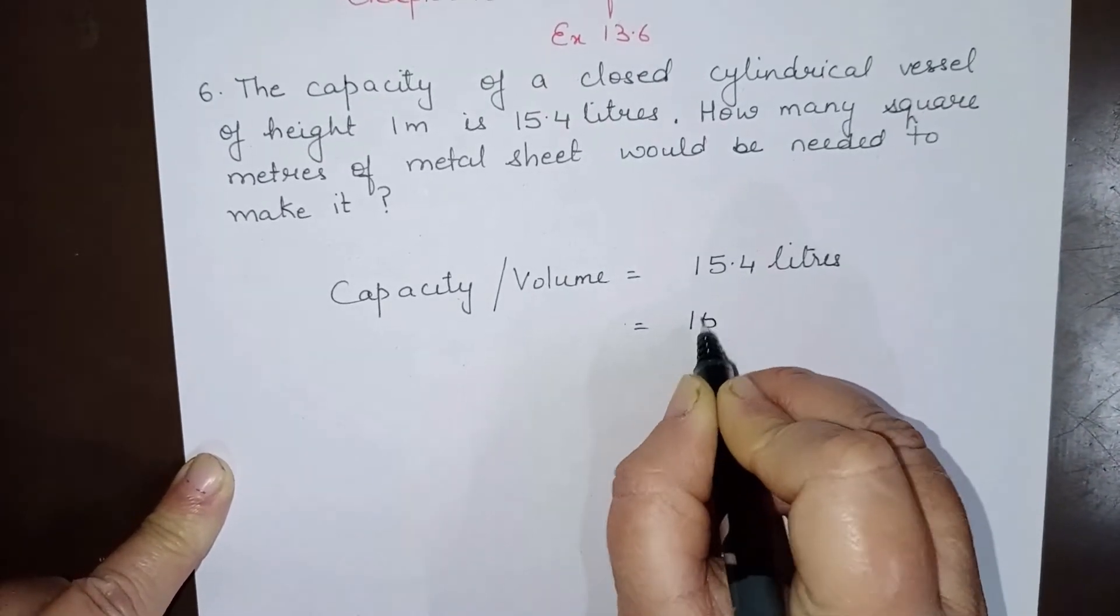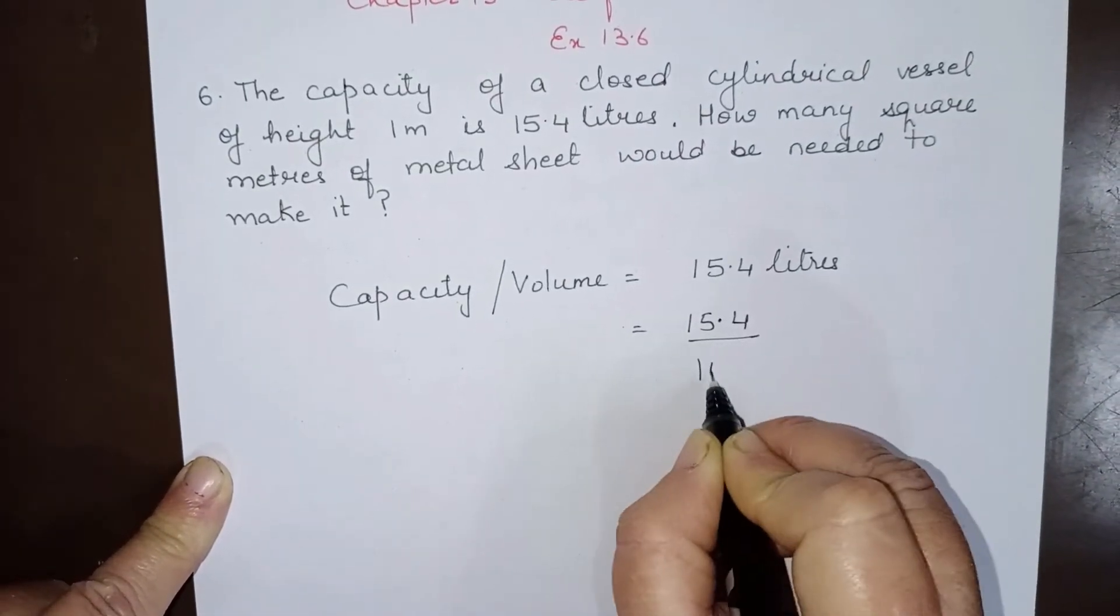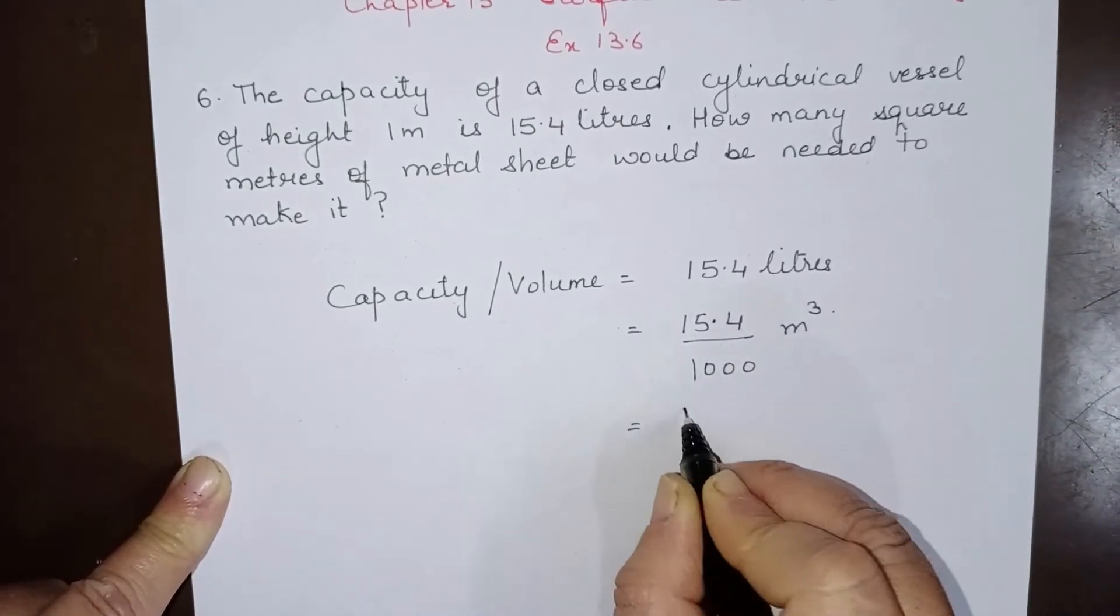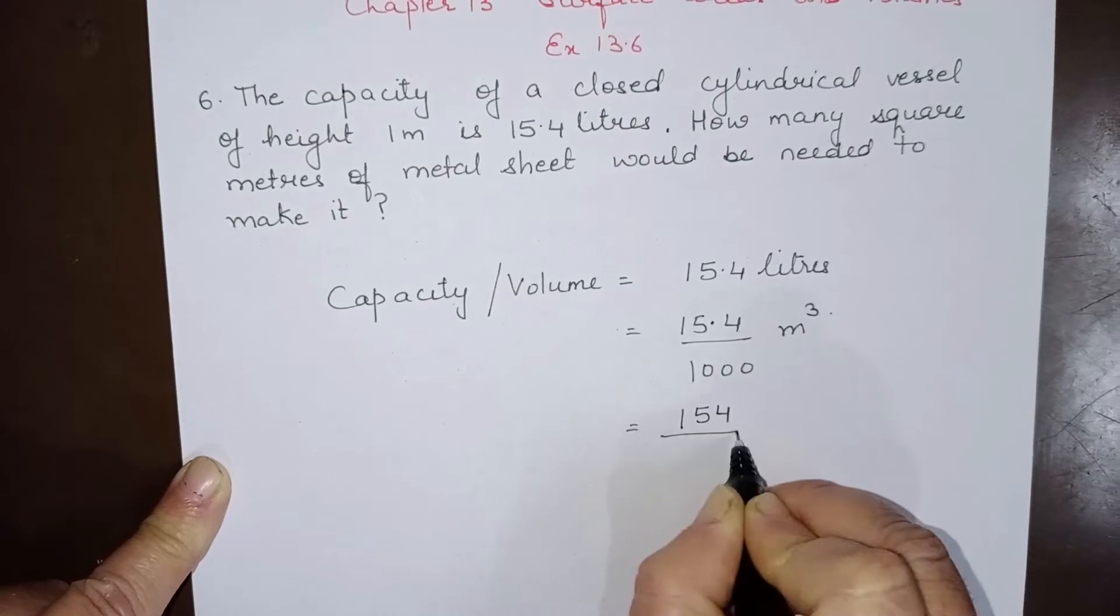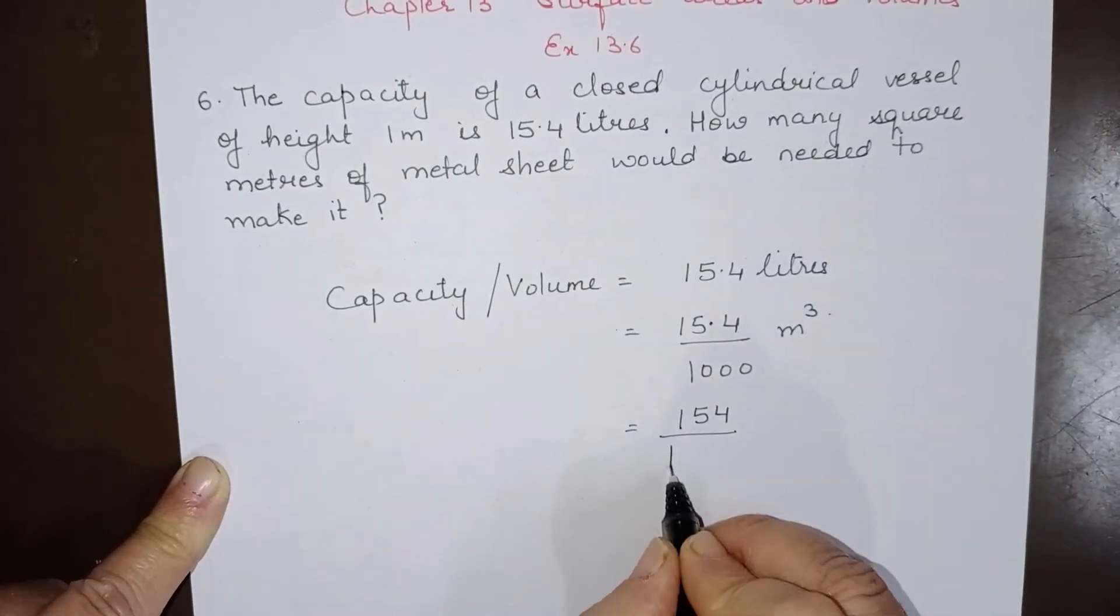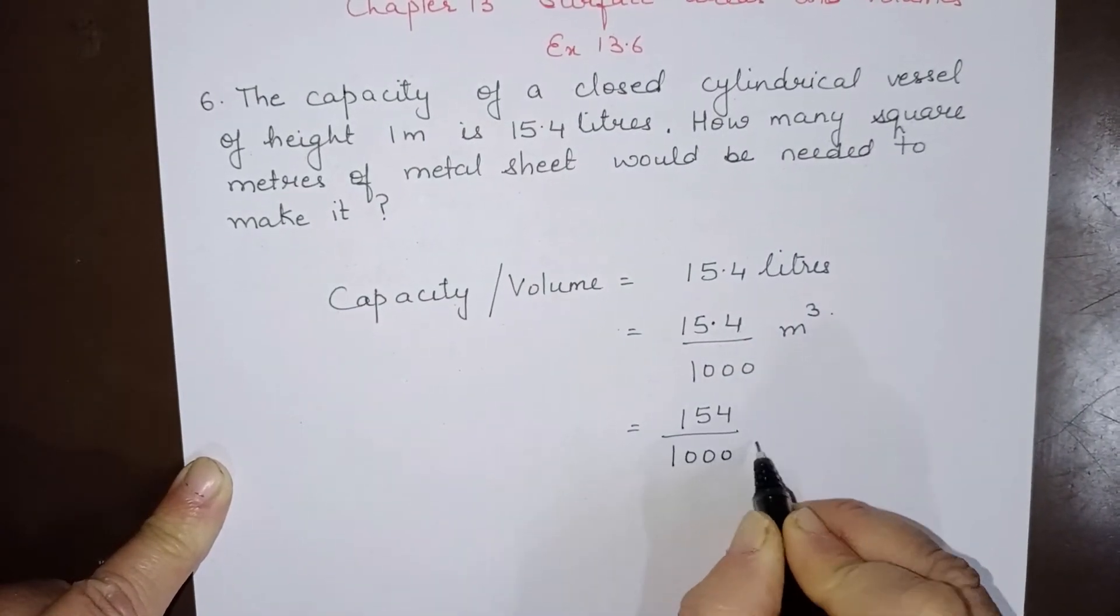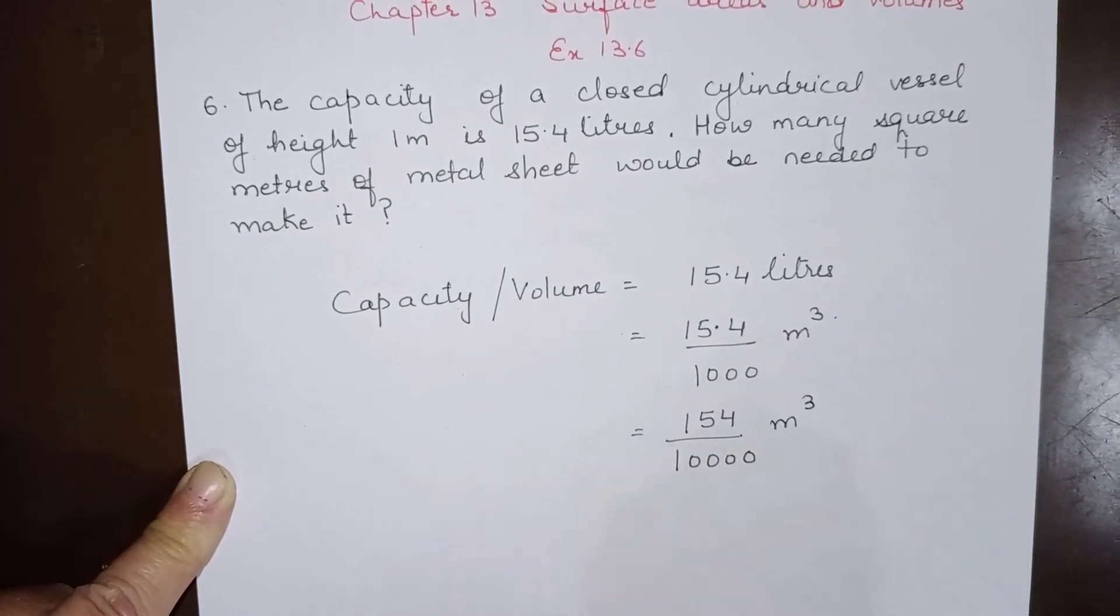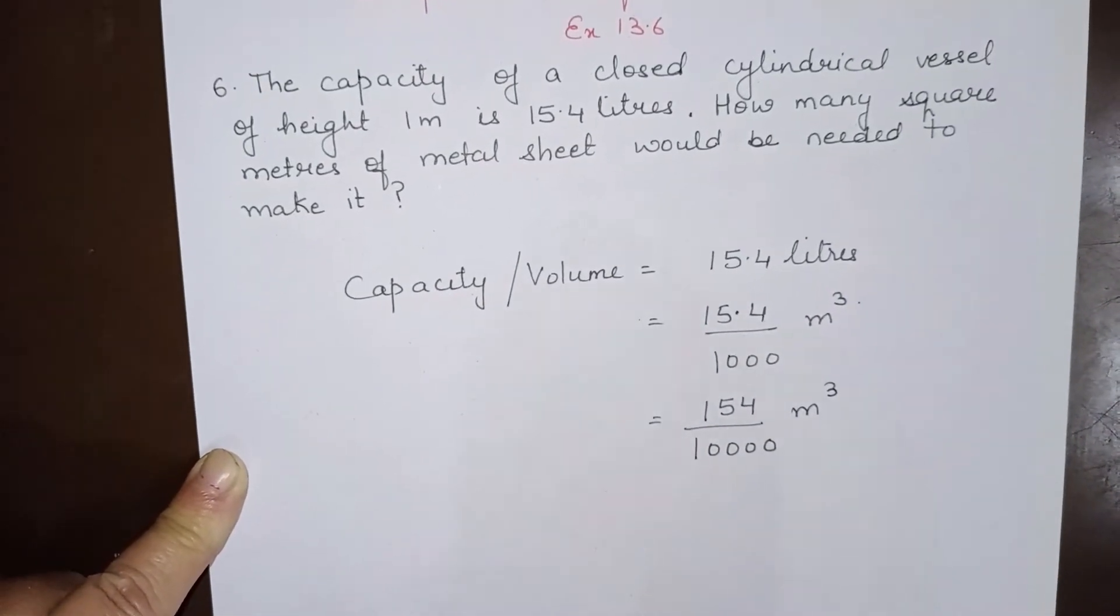To convert this to cubic meters, we divide by 1000. This can be written by removing the decimal sign and adding one more zero, giving us 154 over 10,000 cubic meters as the capacity.